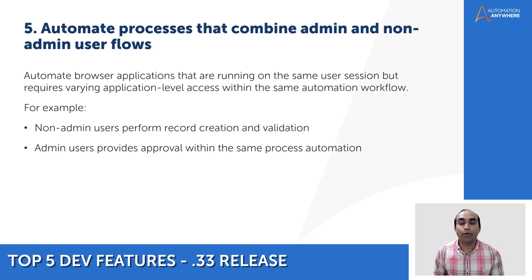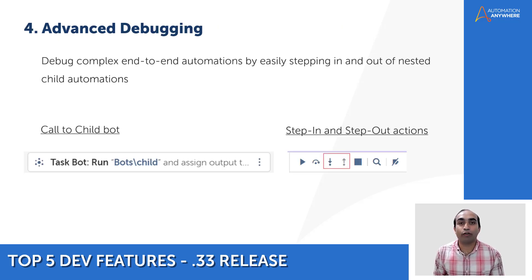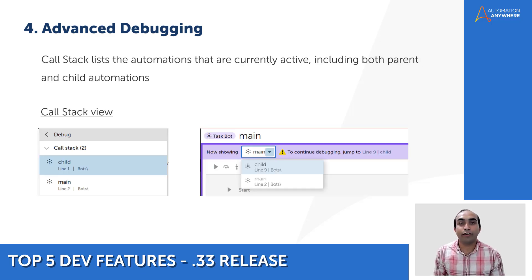Moving on to number four: advanced debugging. With this feature, you can now debug complex multi-level automations. We have introduced the step-in and step-out features to navigate between child and parent automations during debugging. We have also introduced a call stack that helps you determine the order in which automations are called.